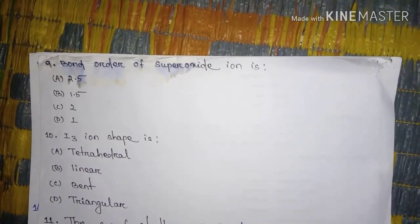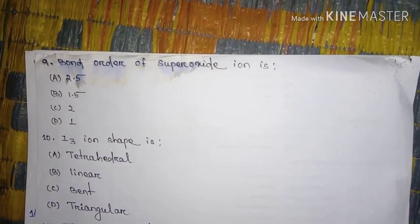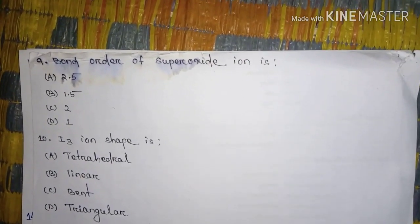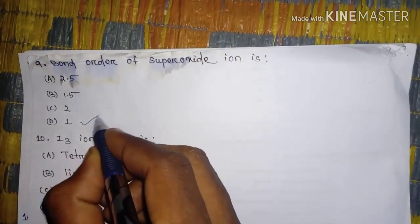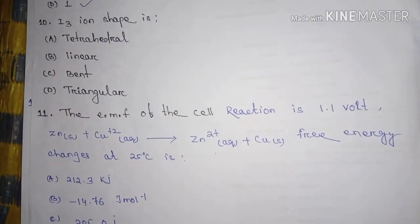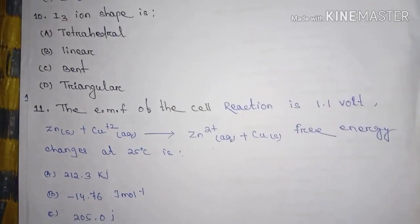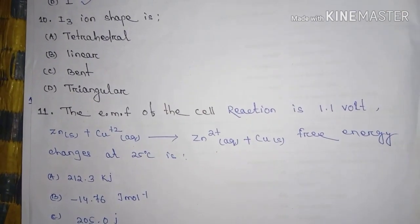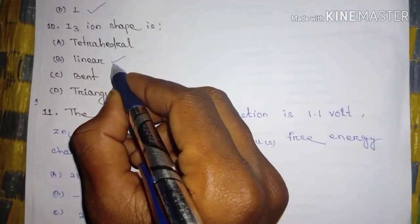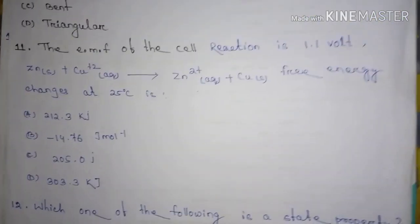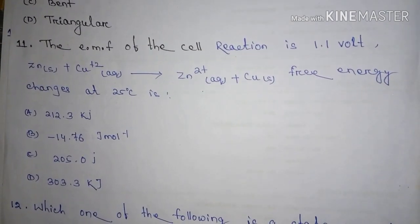Question number nine, bond order of superoxide ion. The answer is one. Question number 10, I3 ion shape is, the answer is linear, that is B.